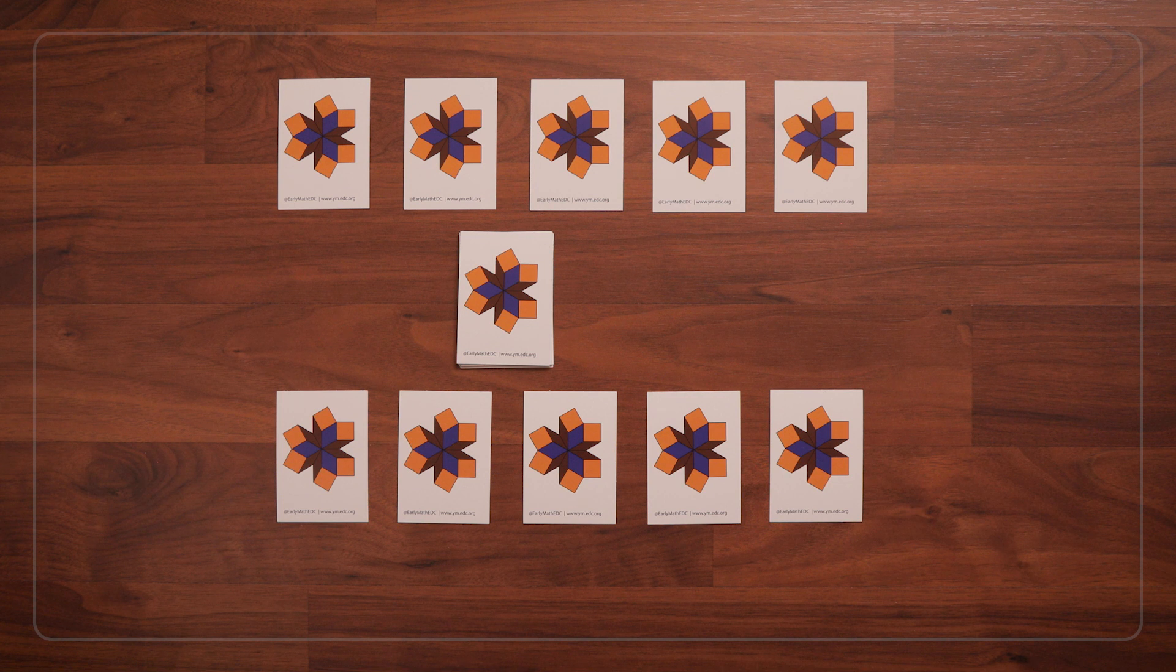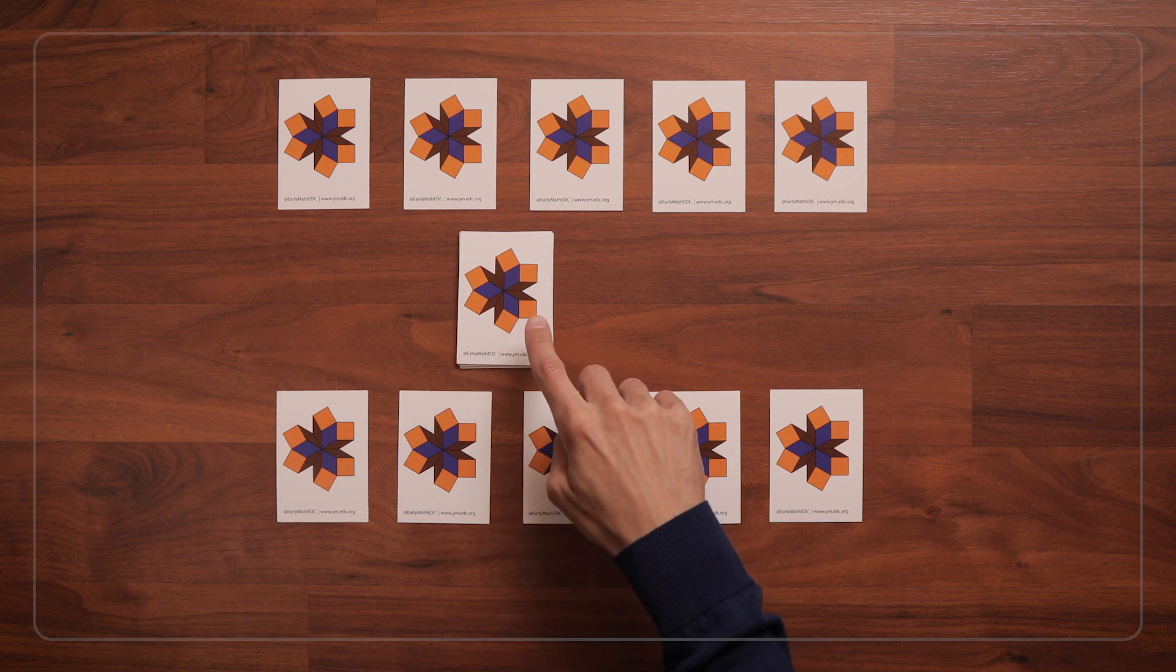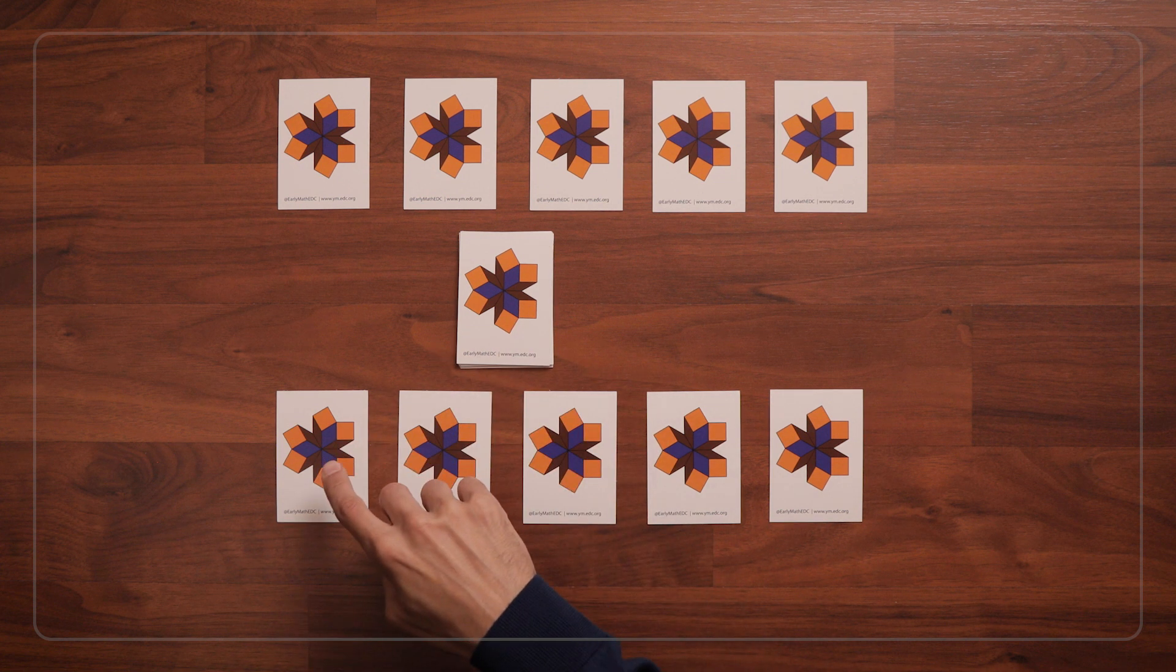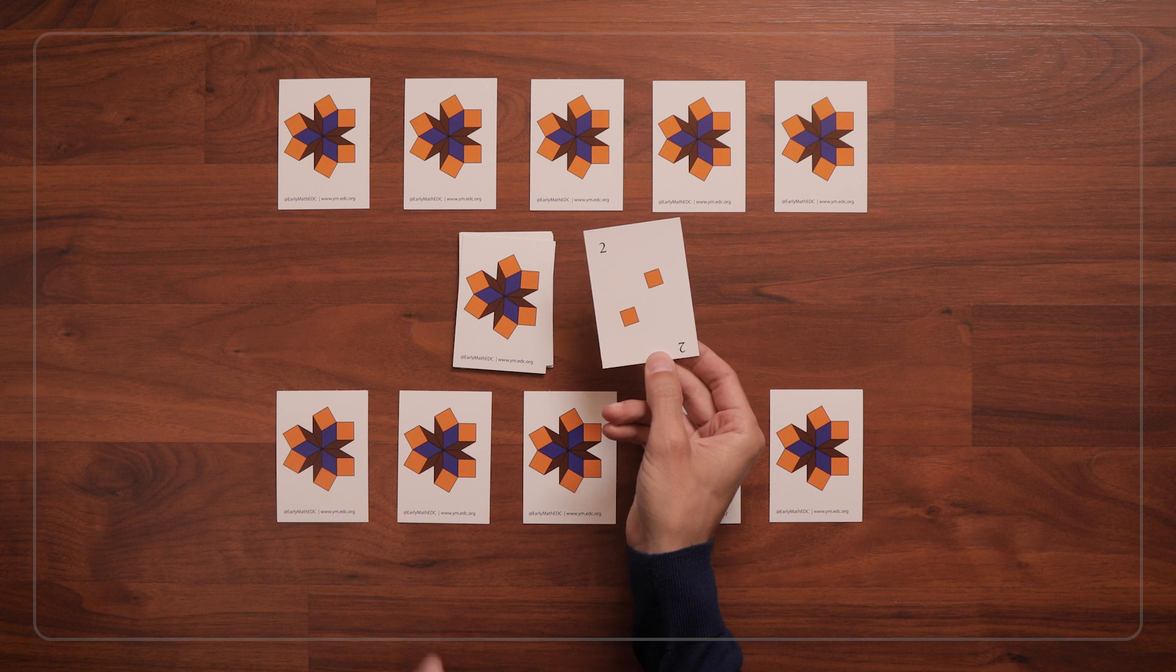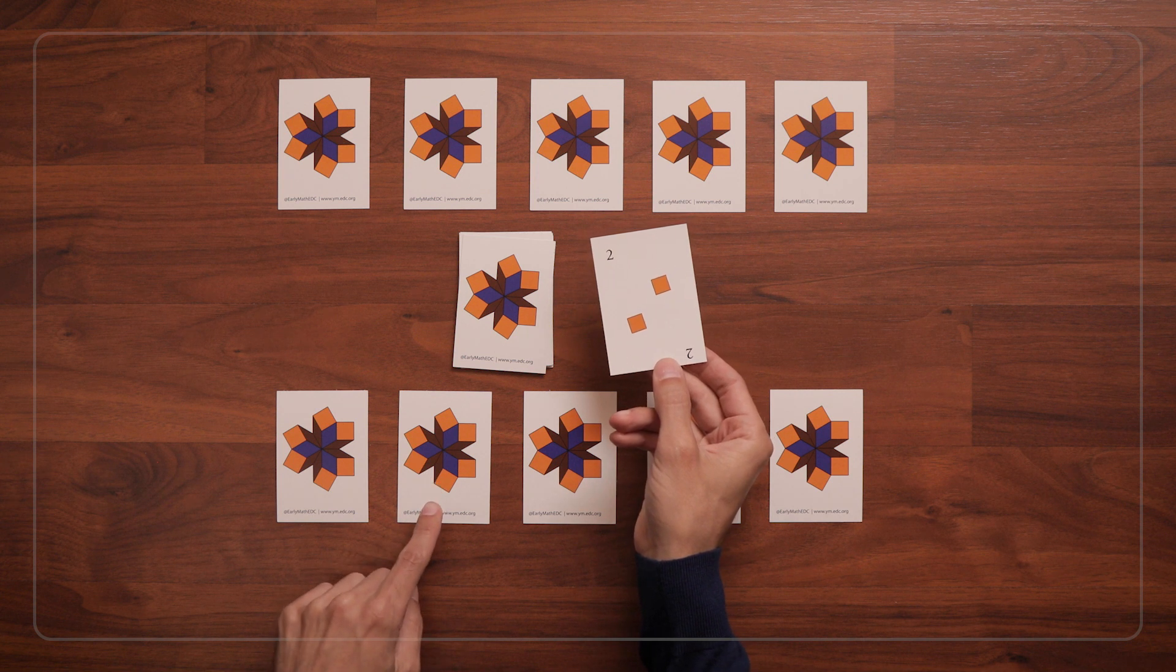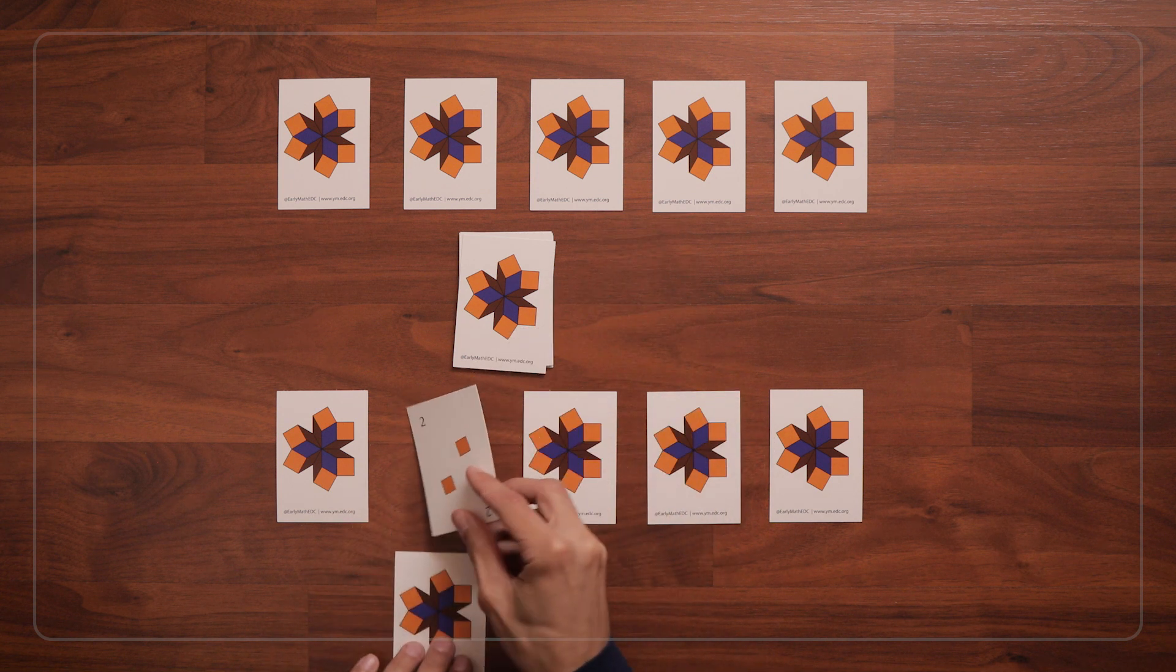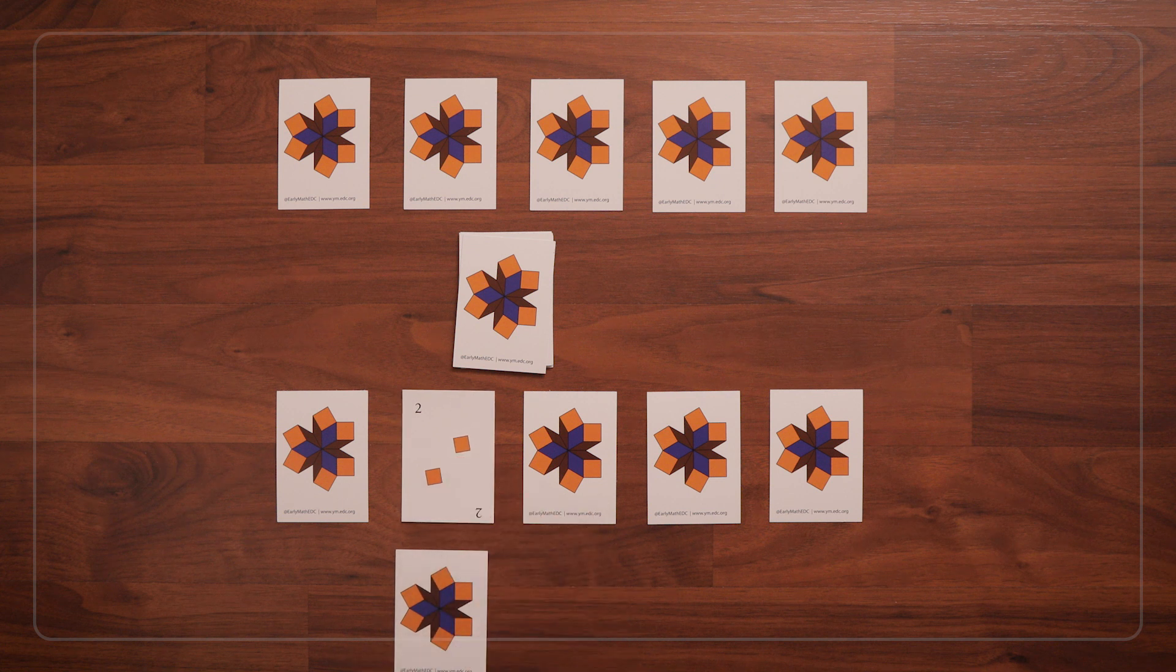Take 1 card from the pile and match the number on the card to the card in that same number position in your line. So I draw a 2, and I'm going to match this card to the card in the 2 position in my line. And I'll replace the face-down card that's there with my new 2 card.